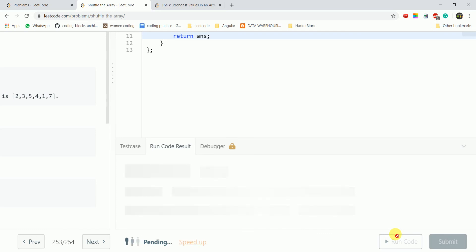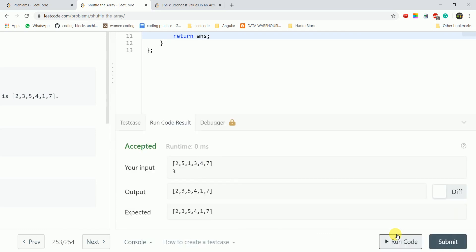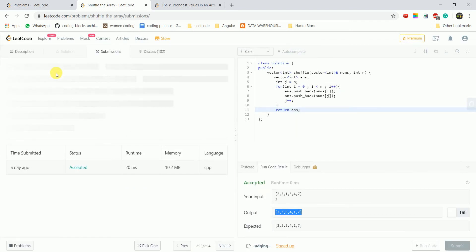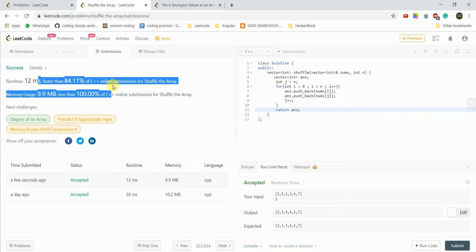Let's run the code. So we've got a correct answer. On submitting what we get is a quite efficient solution. So this was an order of n solution that we discussed.